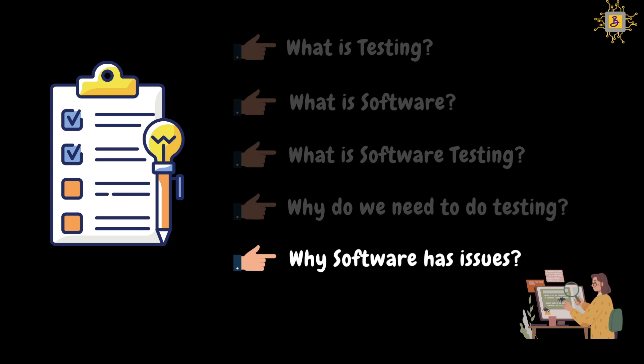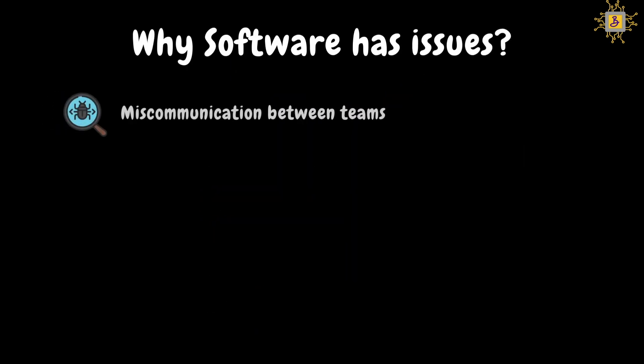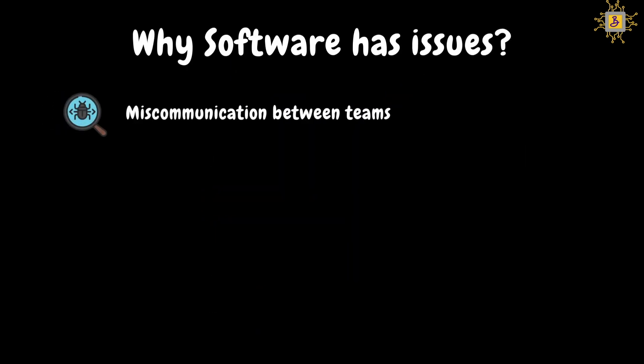Now that we understand why testing matters, let's look at what causes software issues. The first reason is miscommunication between teams. In a software company, many different teams are involved. If there is a communication gap, there is a chance of software issues. For example, if the developer and tester have different understandings of a functionality, their expectations will differ, leading to issues in the software.